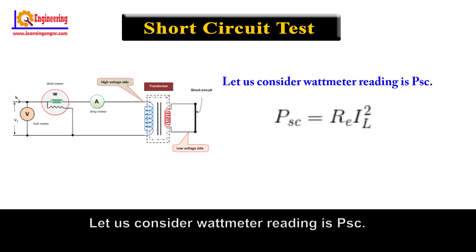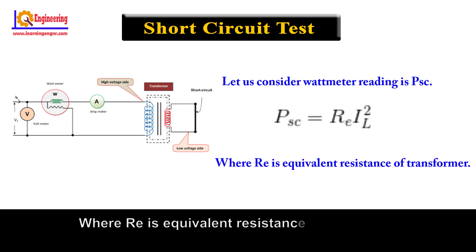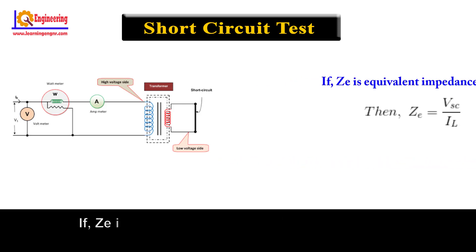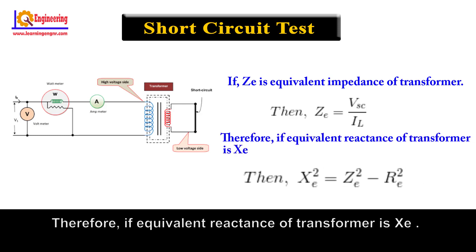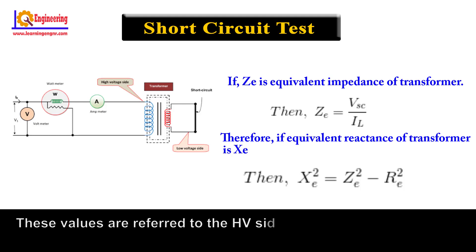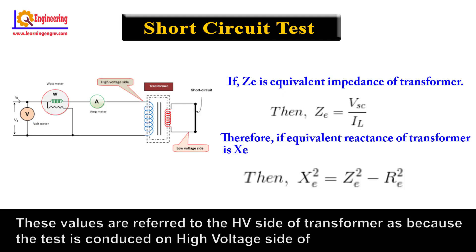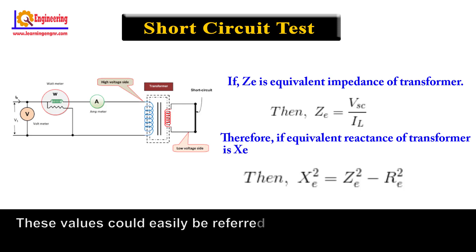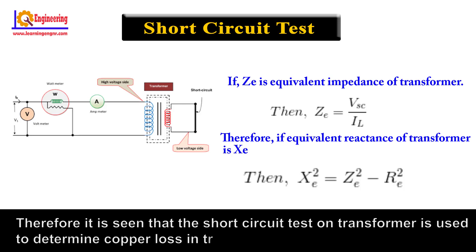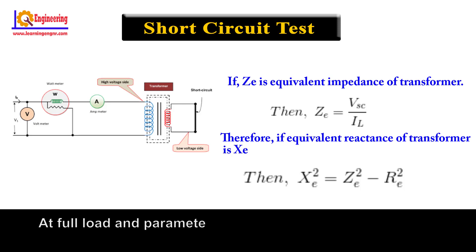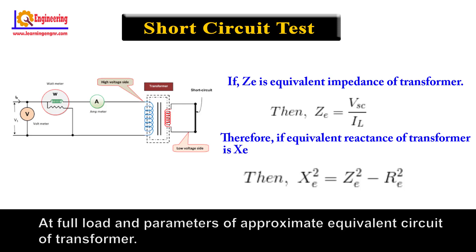Let us consider the wattmeter reading is PSC, where Re is the equivalent resistance of the transformer and Ze is the equivalent impedance of the transformer. These values are referred to the high voltage side of the transformer, as the test is conducted on the high voltage side. These values could easily be referred to the low voltage side by dividing these values with the square of the transformation ratio. It is seen that the short circuit test on transformer is used to determine copper loss in transformer at full load and the parameters of the approximate equivalent circuit of transformer.